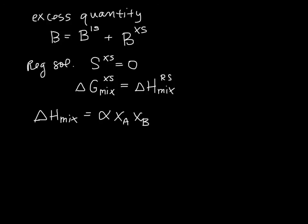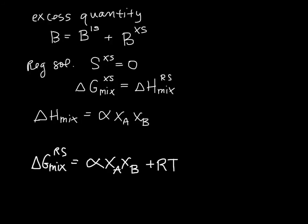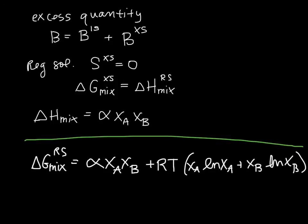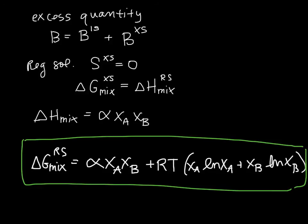We can now write an expression for delta G of mixing for the regular solution model: it equals alpha·XA·XB — that's the enthalpy of mixing — plus RT times (XA ln XA plus XB ln XB), which is the minus T times delta S term. This is the important equation to take away. It is a function of composition, temperature, and this one adjustable parameter alpha.